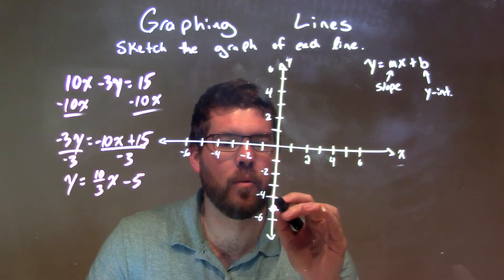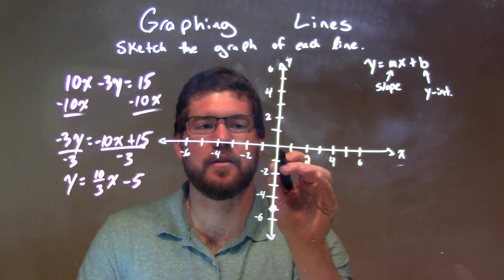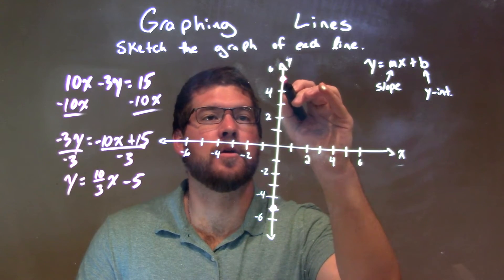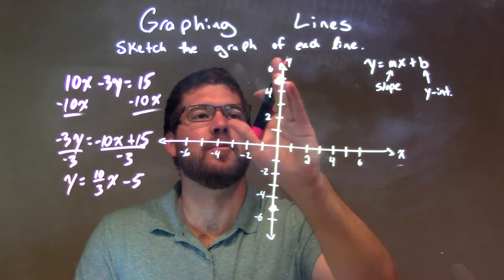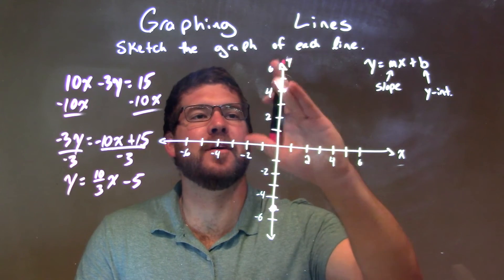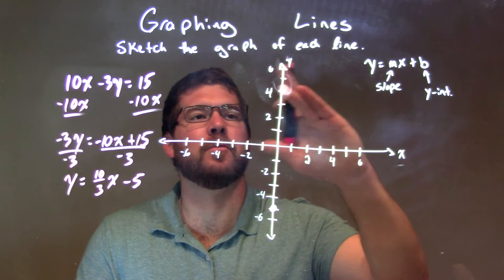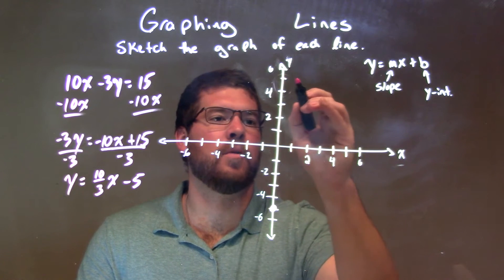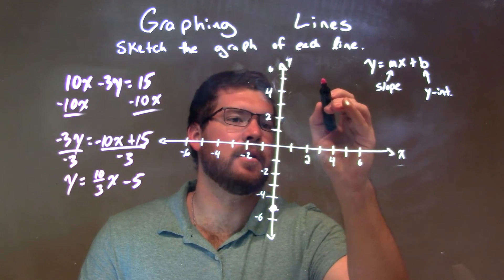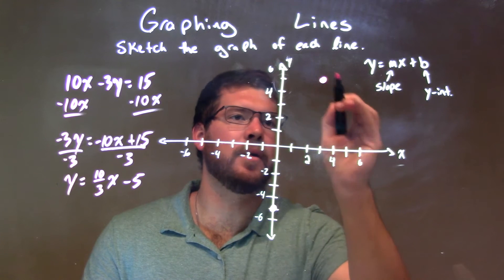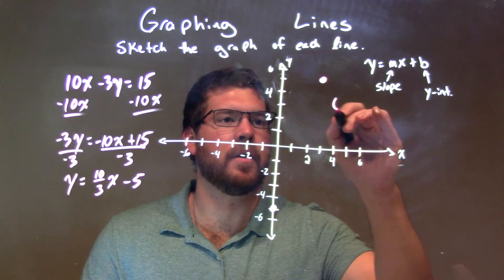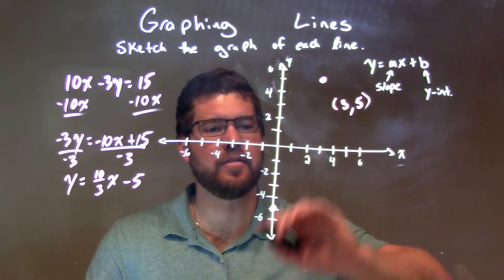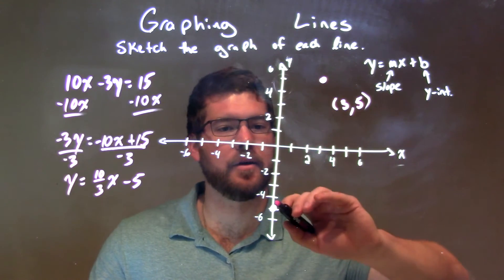So from here, 1, 2, 3, 4, 5 gets me to the origin. 6, 7, 8, 9, 10 gets me here to positive 5, right? We've got a point there, but we've got to move over — don't forget the run. So we're here at 5, we've got to go over 3: 1, 2, 3. And there we have our point. That coordinate point right there is (3, 5). So we connect these two dots to make our line here.